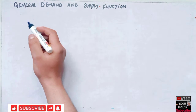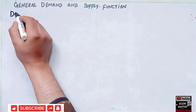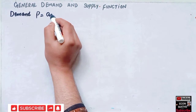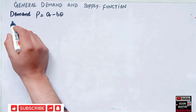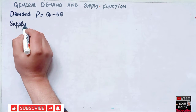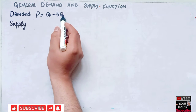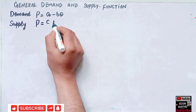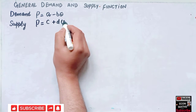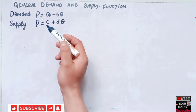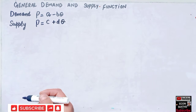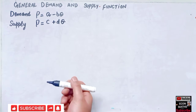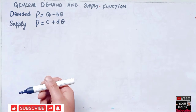Let us say we are given an inverse demand function: P = a - BQ, and our supply function is given as P = C + DQ. These are the inverse demand and supply functions, which are functions of quantity, where P is the price, Q is the quantity, and A, B, C, D are the parameters.